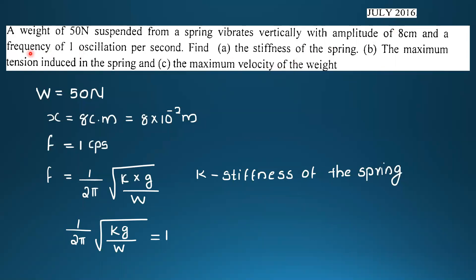Spring related problems. Problem one: a weight of 50 Newton suspended from a spring vibrates vertically with an amplitude of 8 centimeters and a frequency of one oscillation per second. Find the stiffness of the spring, the maximum tension induced in the spring, and the maximum velocity of the weight.